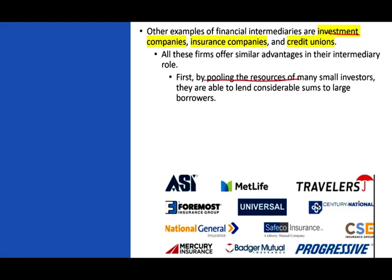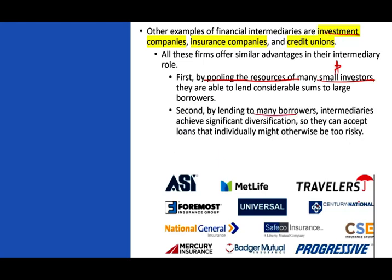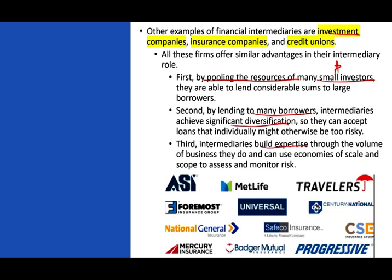Financial intermediaries offer three key advantages. First, they pool resources from many small investors to lend considerable sums to large corporations. Second, by lending to many borrowers across many industries, they achieve significant diversification, which reduces risk. Third, they build expertise through the volume of business they do, using economies of scale and scope to assess and monitor risk.